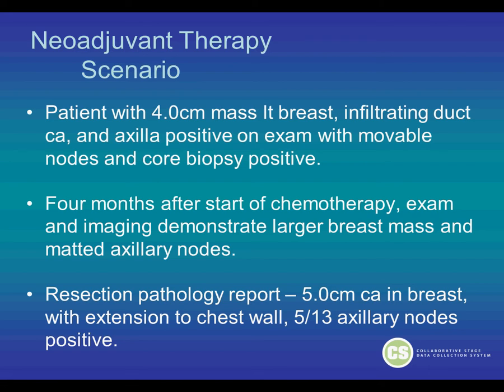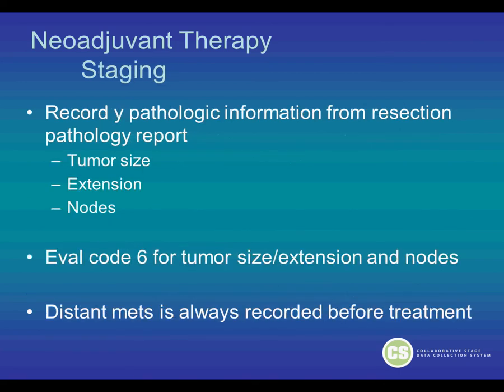The patient went on to have a resection, and the resection pathology report showed a 5-centimeter carcinoma in the breast with extension to the chest wall and 5 of 13 axillary lymph nodes positive. This is obviously a worse scenario than what the patient had at the time of diagnosis at the clinical stage. For staging, you should record the Y-pathologic information from the resection pathology report — the tumor size, the extension, and the nodes — and code eval code 6 for the tumor size, extension, and for the nodes. The distant metastasis is always recorded prior to the treatment.